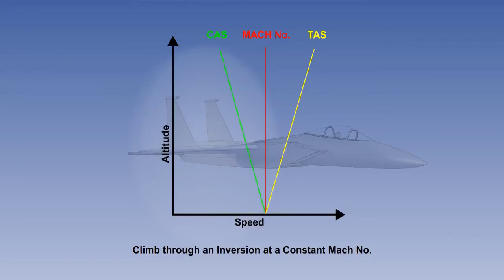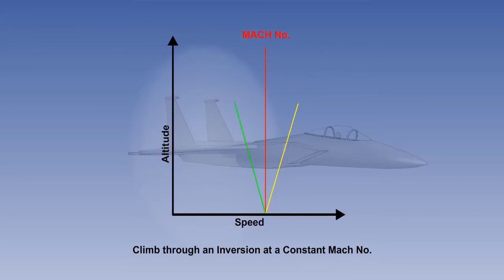Now, let's look at what's happening to the CAS. Calibrated airspeed, or CAS, when corrected for air density, gives us TAS. The air density is reducing with altitude, and therefore the CAS will be reducing also. In the descent, the reverse will apply: the LSS and TAS will decrease, and the CAS will increase. Note the Mach-TAS-CAS relationship is no longer CTM, because ISA conditions no longer apply.